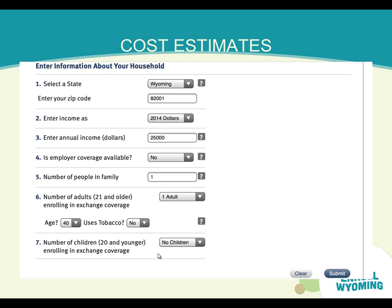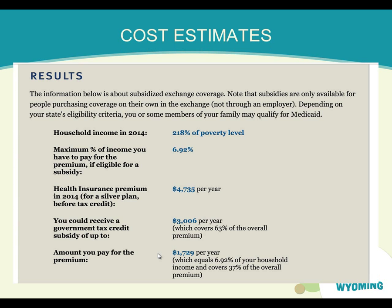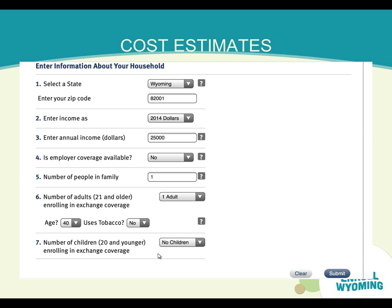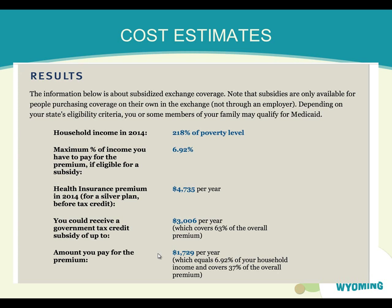Then put in your 2014 income. If you are self-employed, in agriculture, or may be changing jobs, please estimate your 2014 income. You can go back and make changes throughout the year so your tax credits reflect the correct amount. For example: an individual making $25,000, adult, non-smoking — premiums will increase as much as 50% if you are a tobacco user. This person falls at the 218% poverty level. Their maximum out-of-pocket for premiums would be 6.92%, with premiums of $4,735 per year. After a subsidy of $3,006, the new annual amount is $1,729 — approximately $145 a month.